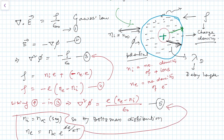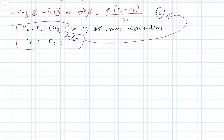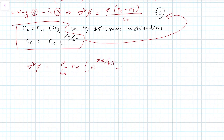Using these two values in equation number five, we will get: del-squared phi equals (e by epsilon-naught) times n-infinity times [e to the power (phi e by kT) minus 1]. Since the temperature is very high, phi e by kT is very much less than one, so we can use the approximation e to the power x equals 1 plus x for small x. Therefore e to the power (phi e by kT) minus 1 becomes approximately (phi e by kT). Using this value, we get del-squared phi equals (e by epsilon-naught) times n-infinity times (phi e by kT).